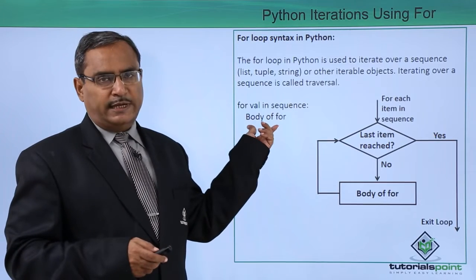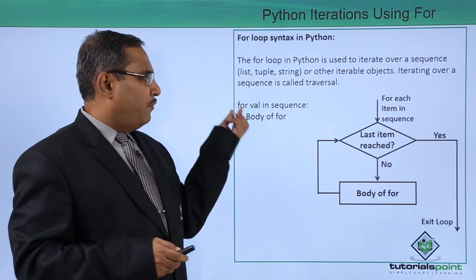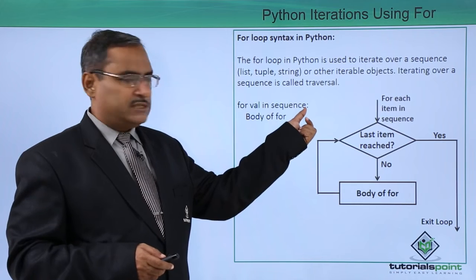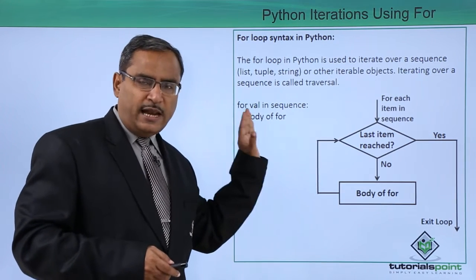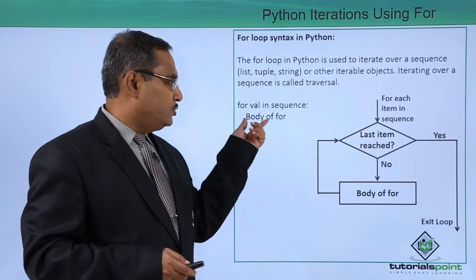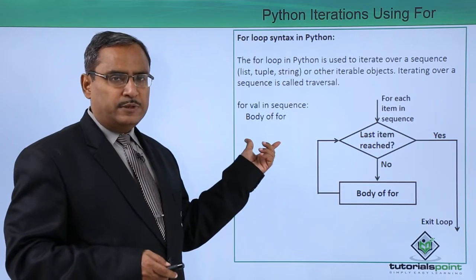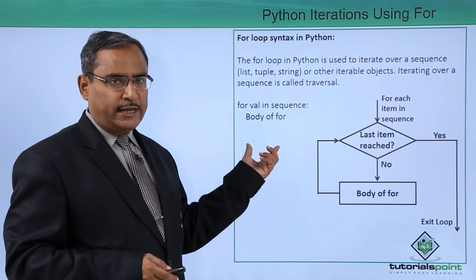Here is the respective syntax for for. For val in sequence - do not forget to give this colon here and if you give this colon then automatically the next line will have some indent. Body of for - you can have multiple statements you can write but with the same indentation in that case.